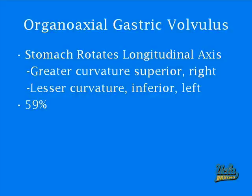Just to clarify, the axis on which the stomach rotates is also called the longitudinal axis. The greater curvature moves to the superior and the right, while the lesser curvature flips over too and becomes inferior and to the left. Organoaxial gastric volvulus occurs in 59% of all diagnosed gastric volvulus cases, so it is considered the most common type.